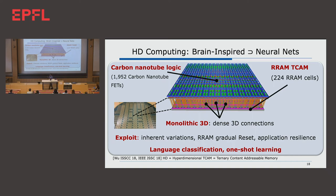In 2018, we demonstrated what is called hyperdimensional computing hardware. Everybody talks about AI, but brain-inspired computing is much broader than just neural nets. One such computing model is hyperdimensional computing, or HD. One advantage is that it performs one-shot or few-shot learning — you don't have to show millions of cat videos to recognize a cat. This chip was demonstrated live at ISSCC in 2018, where people were training languages to the chip right in front of everybody. It would just take a few sentences for the chip to understand that this is French, this is German, this is Spanish, and immediately recognize languages.